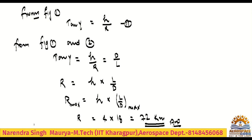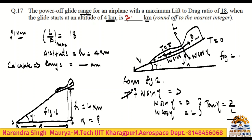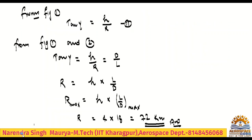So the answer is 72 because altitude is 4 kilometers and L/D is 18: 4 into 18 equals 72 kilometers. Always remember for fill-in-the-blank problems, unit is very important. If it were given in meters, you would write 72,000. But here the unit is kilometers, so the answer is 72.